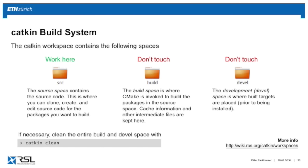Once you build your Catkin workspace, you'll see three folders: the src folder, the build folder, and the devel folder. The src folder is where you put all your source code. The build folder is a CMake cache folder, and devel is where executables are placed before installation. You never typically touch the build or devel folders — all your work is in the src folder. If things get mixed up, you can type catkin clean to wipe out build and devel and rebuild from scratch.